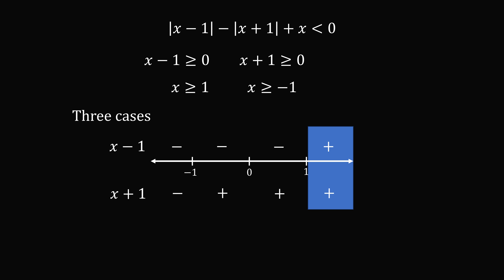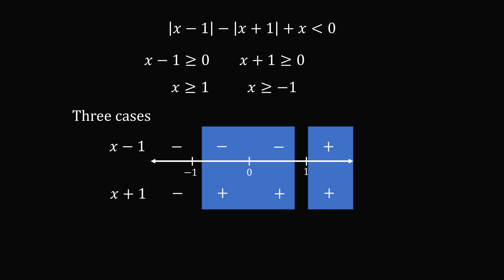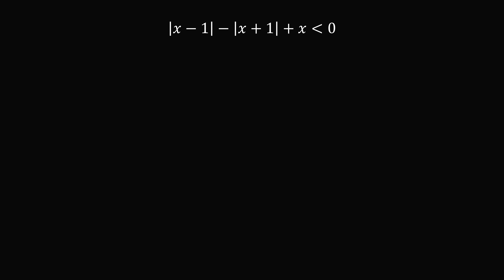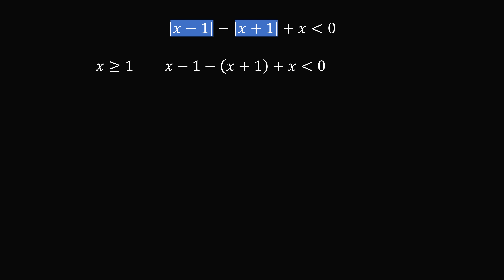One case: both are positive. In another case: one is positive, the other is negative. In the third case: they're both negative. Starting with x greater than or equal to 1 — both terms are positive — we have x minus 1 minus the quantity x plus 1, plus x, is less than 0. Simplifying, we end up with x is less than 2. Combining with x greater than or equal to 1, we get 1 is less than or equal to x is less than 2.